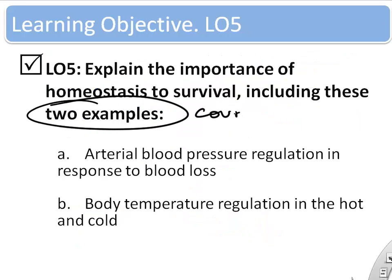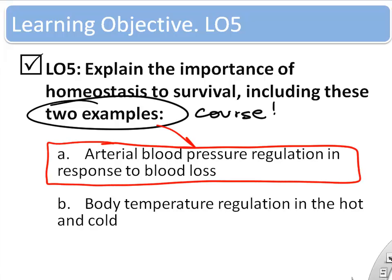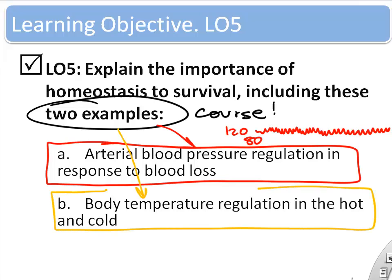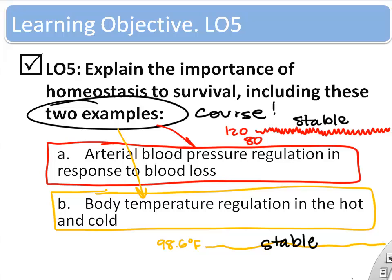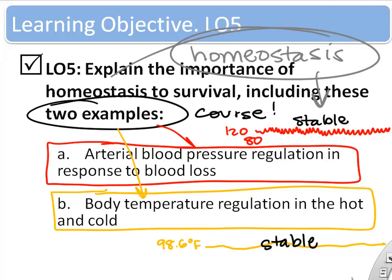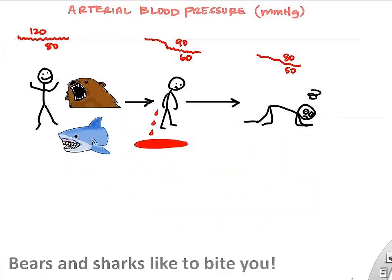For our next learning objective, we're going to look at two examples of homeostasis in your body. One is arterial blood pressure — the value your doctor gives you like 120 over 80 — which stays pretty constant throughout the day. The other is body temperature, regulated to be fairly constant at about 98 degrees Fahrenheit or 37 degrees Celsius. These are great examples of homeostasis.